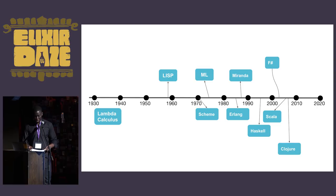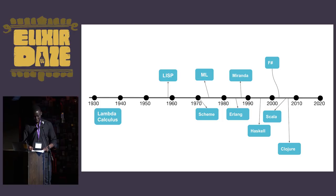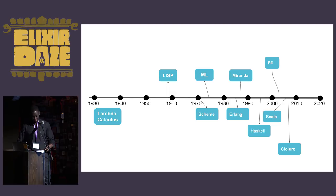In 2007, Clojure emerges as another functional language on the JVM. Although it leverages the power of the JVM like Scala, it does not borrow any of the object-oriented features from Java. It instead adopts Common Lisp as its main dialect, adhering to Common Lisp's syntax as well as its overall programming model.